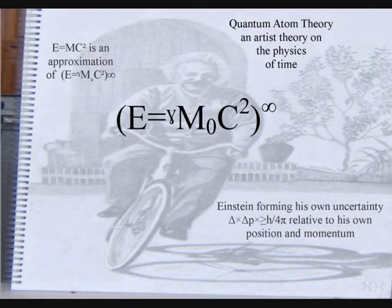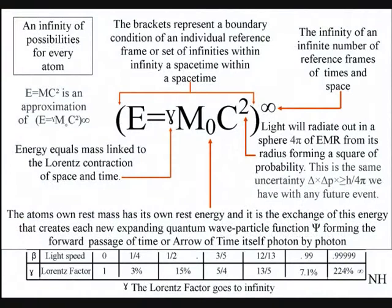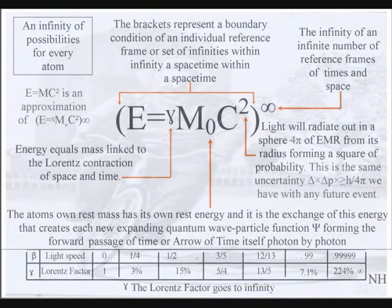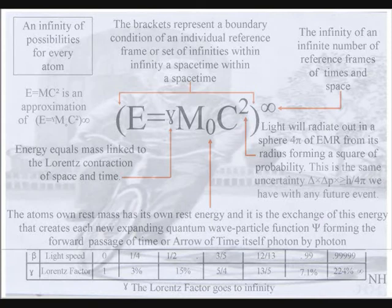This can be explained in just one equation, energy equals mass, linked to the Lorentz contraction of space and time. Therefore, the greater the energy, the greater the contraction of space, and the slower time will run. Mass will increase relative to this, and each reference frame can be seen as a vortex in space and time.